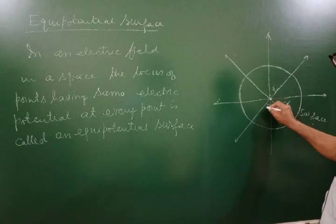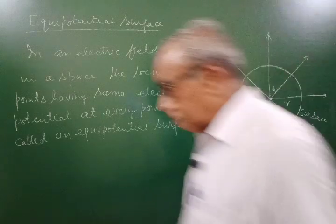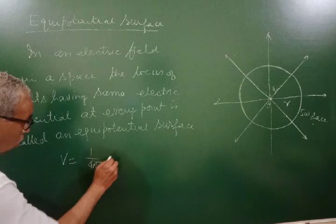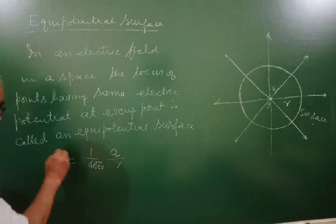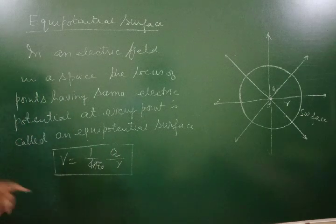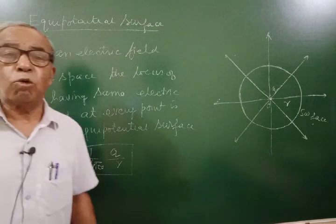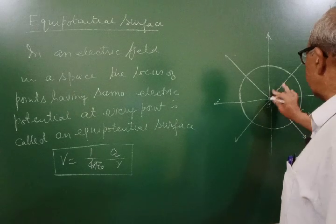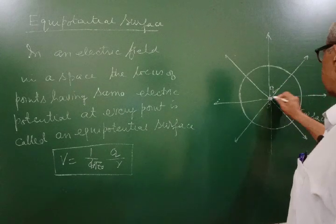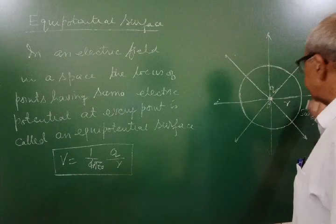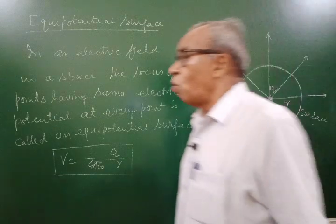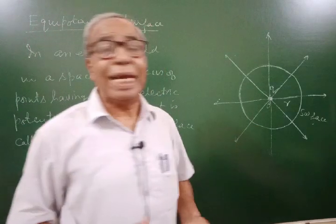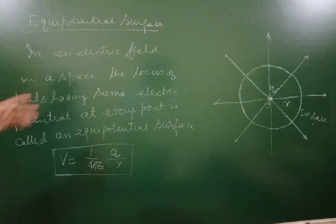For a point charge, the electric potential at distance r is equal to one upon four pi epsilon zero times q by r. So the potential due to a point charge remains constant if r remains constant. For example, if we place a point charge q at a point, all points at the same distance r form a sphere with center at charge q, and that sphere is an equipotential surface.